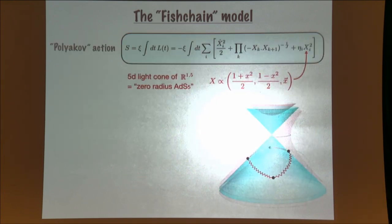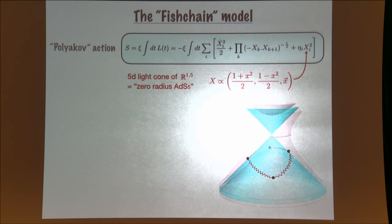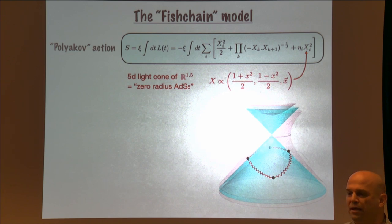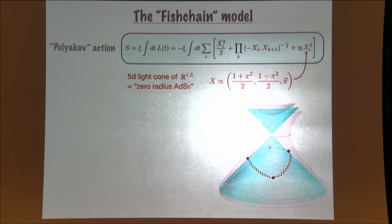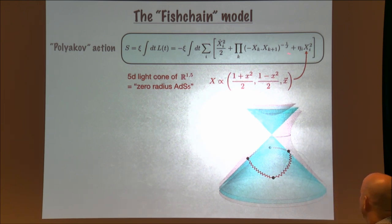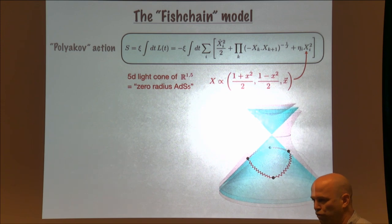When we do that, we end up with the following action, which is equivalent to the earlier one but looks much more standard. Here again we have the 't Hooft coupling standing outside. We have a standard kinetic term for J particles living on the light cone of R^{1,5} — a chain of particles living in five dimensions, which you should think of as the boundary of AdS. We take the radius and set it to zero. The interaction is a product of all nearest-neighbor interactions on the chain. The eta is just a Lagrange multiplier that fixes x^2=0, so we are on the light cone of R^{1,5}.